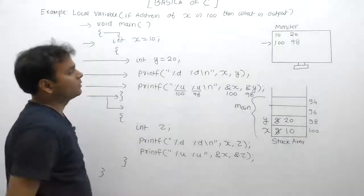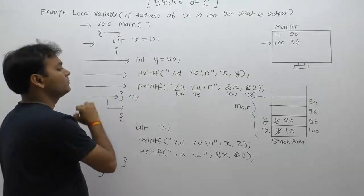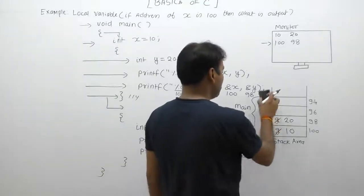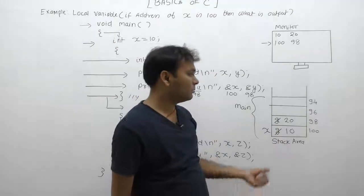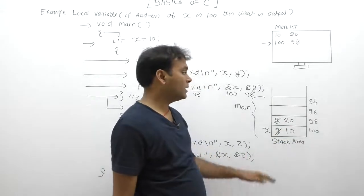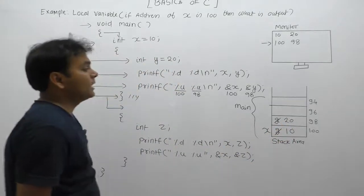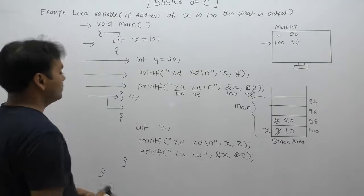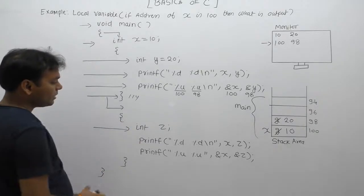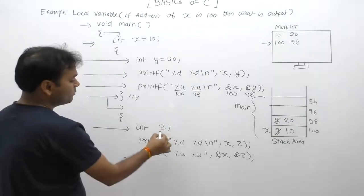After control moves outside the inner block, we can see that y's location is de-allocated because y is a local variable of that block. So de-allocation of y's location has been performed, but the same memory location still contains the value 20. However, 20 is now considered a garbage value because it is placed inside unreserved memory. After that, control moves to the next inner block and memory allocation is performed for variable z.